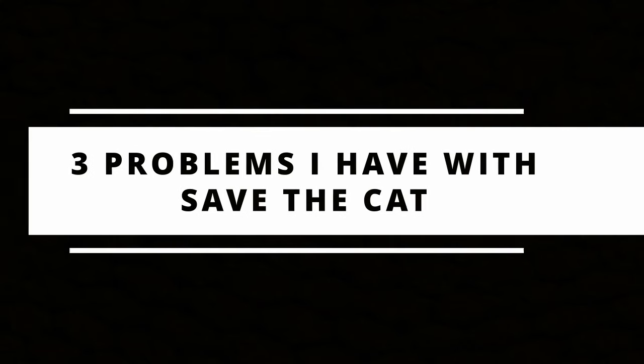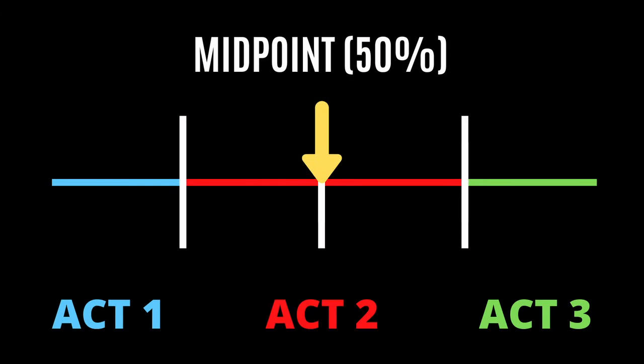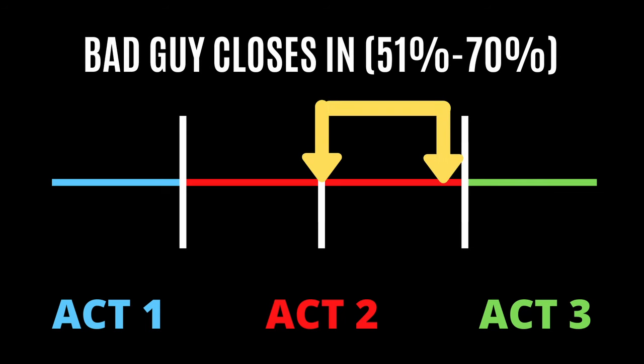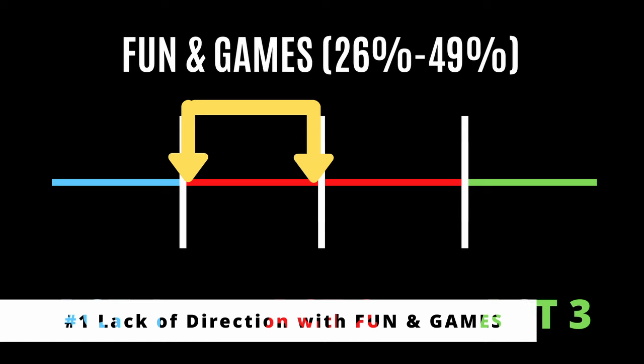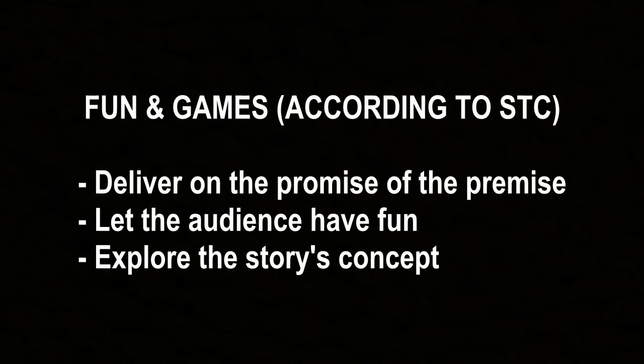As I mentioned, I had some problems with this beat sheet. All three of my major problems come from the middle — specifically steps eight, nine, and ten. The first problem is with the fun and games. It gives a lack of direction for the first half of act two — the second quarter of your story. Basically all it tells you to do is deliver on the promise of the premise and be fun, but that doesn't give you anything practical to work with. There are no checkpoints or guideposts, no recipe for where to go or how to succeed.